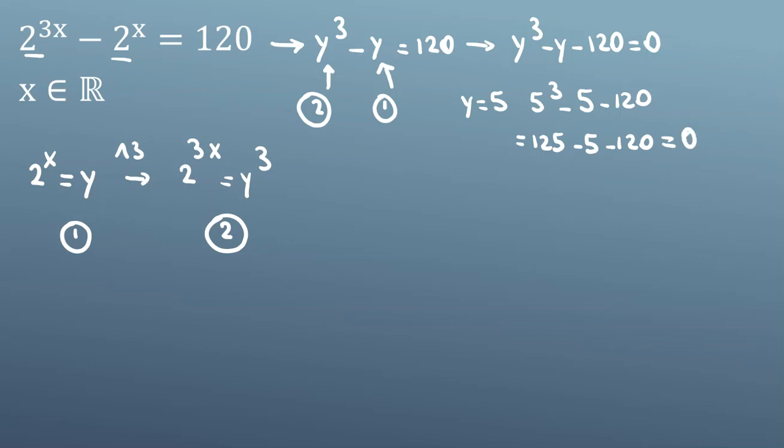We can say y^3 - y - 120 equals (y - 5) times something. Since y = 5 satisfies this equation, (y - 5) is one factor. This is a good way to find one factor.